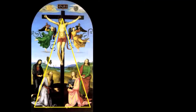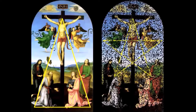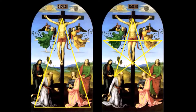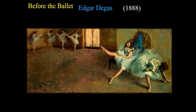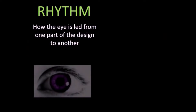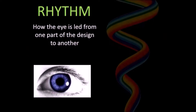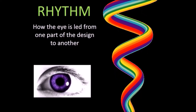Raphael's Mond Crucifixion uses both to perfectly proportion the various figures in relation to the figure of Christ. Emphasis is the part of design that catches the viewer's attention. Usually the artist will make one area stand out by contrasting it with other areas — the area could be different in size, color, texture, and/or shape. In Degas' Before the Ballet, the largest figure of the seated ballerina, backed by the bright blue, and her outstretched leg draws the eye first.